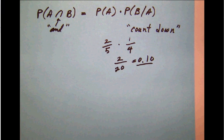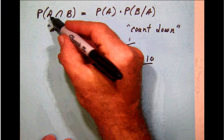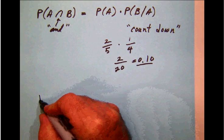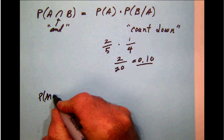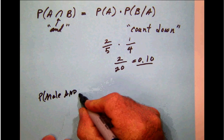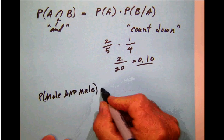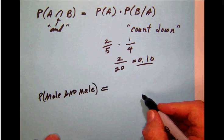This time A stands for male, so we're going to get a male and the second time we're going to get a male. The probability of getting a male—well, as we look back at our probabilities here—